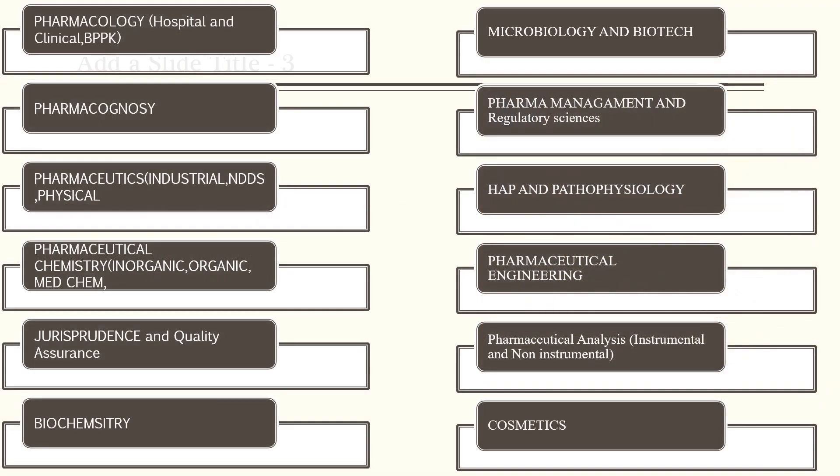In this series, we will be learning about the strategy for pharmacology, which encompasses hospital pharmacy, clinical pharmacy, and biopharmaceutics and pharmacokinetics; strategy to study pharmacognosy; strategy to study pharmaceutics, physical pharmacy, and industrial pharmacy; pharmaceutical chemistry which encompasses medicinal chemistry, organic chemistry and inorganic chemistry; pharmaceutical jurisprudence; quality assurance; biochemistry; microbiology and biotechnology; regulatories; pharmaceutical management; HAP and pathophysiology; pharmaceutical engineering; and pharmaceutical analysis which has instrumental as well as non-instrumental methods, and cosmetic sciences.